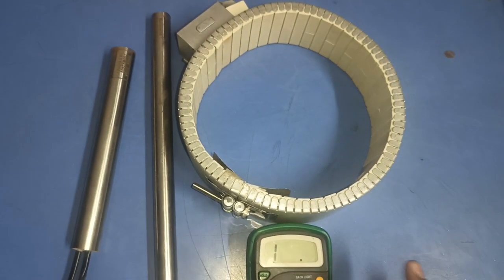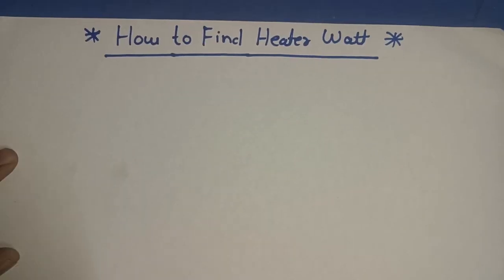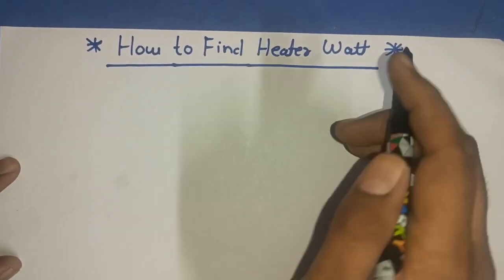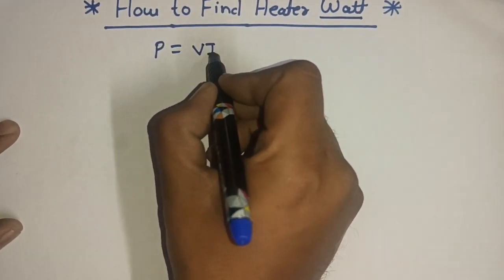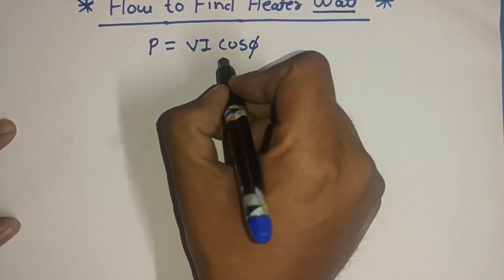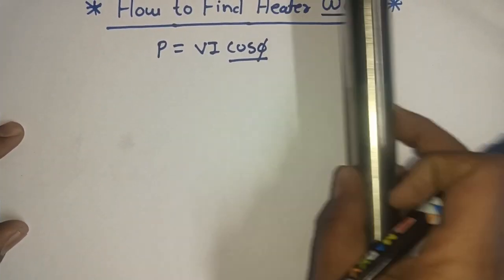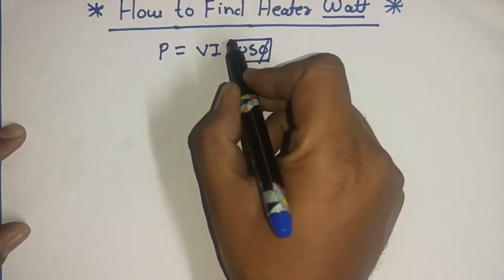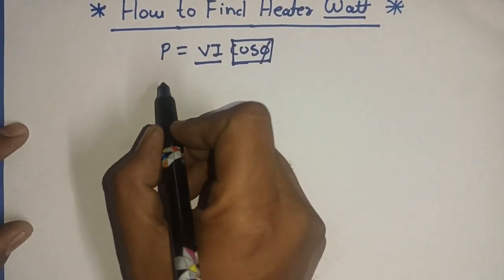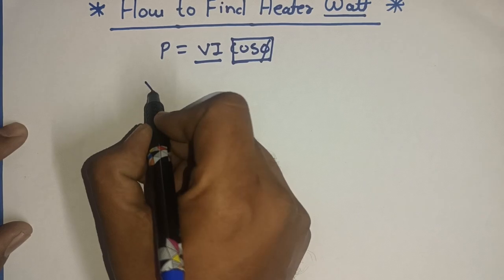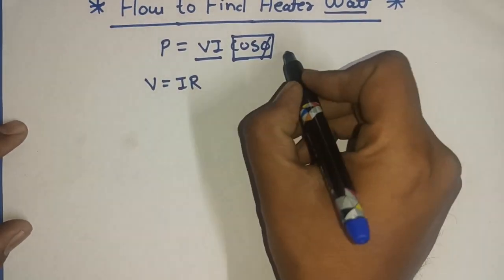First, we understand which formulas required for this calculation. We just required simple formula of power. P is equal to Vi cos phi. Cos phi is power factor because heater is resistive load. So, in resistive load, power factor is 1. So, simple formula P is equal to Vi. And as we know, V is equal to Ir.